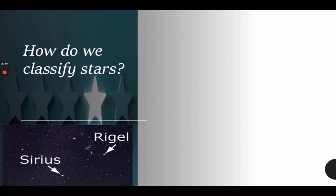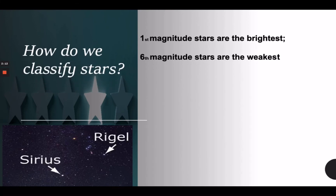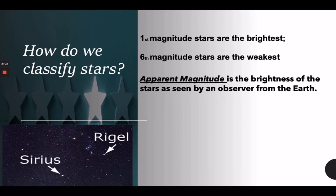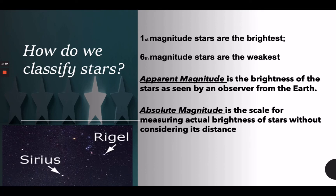How do we classify stars? First magnitude stars are the brightest, while sixth magnitude stars are the weakest. Now let's differentiate apparent magnitude from absolute magnitude. Apparent magnitude is the brightness of the stars as seen by an observer from Earth, while absolute magnitude is the scale for measuring the actual brightness of stars without considering its distance.